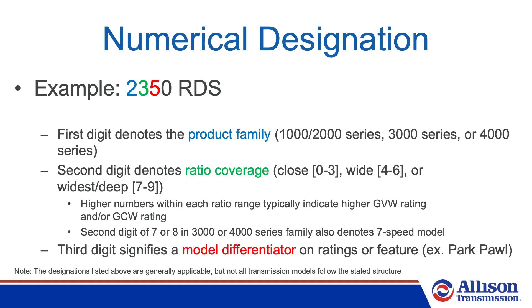Let's start by reviewing the numerical designation. The first digit denotes the product family. In the case of the 2350 RDS, this transmission is in the 1000-2000 product family. The second digit denotes the ratio coverage. If the number is between 0 and 3, the transmission has a close ratio. If it has a 4 to 6, it has a wide ratio. And a 7 to 9 generally indicates a deep ratio. Within each range, a higher number typically indicates a higher GVW or GCW rating.